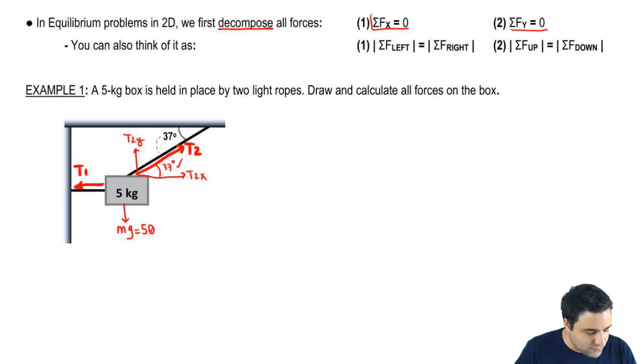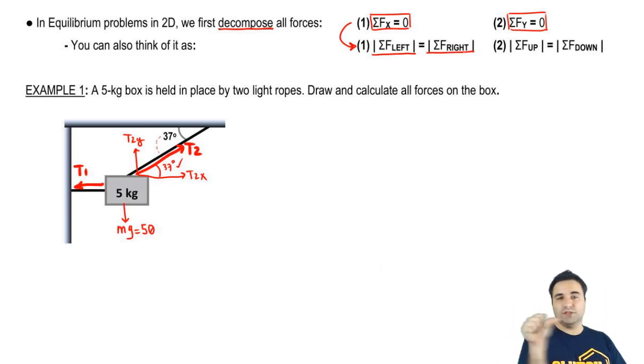I said that the sum of all forces equals zero on the x-axis and the y-axis, but the way that I like to think of these problems that makes more sense, it's more visual, is to think that all the forces to the left equal all the forces to the right, and all the forces up equals all the forces down. Notice that I have absolute value signs here, and the reason for that is that when I write it this way, I don't have to worry about signs.